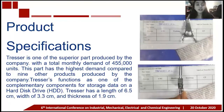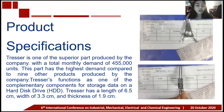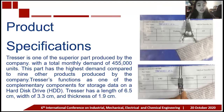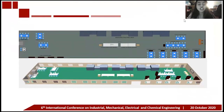Moving to the product specification: Tracer is one of the superior parts produced by the company with a total monthly demand of 455,000 units. This part has the highest demand compared to nine other products produced by the company. The tracer functions as one of the complementary components for storage data on a hard disk drive (HDD). It has a length of 6.5 cm, width of 3.3 cm, and thickness of 1.9 cm.